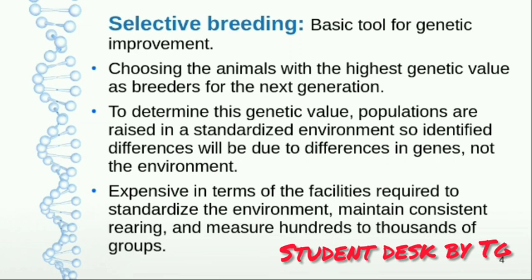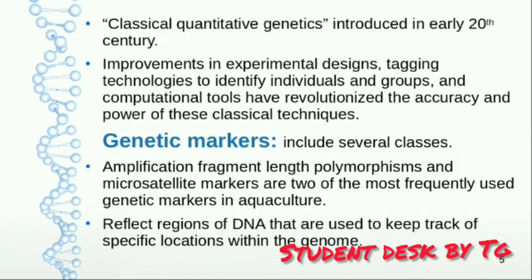We have to observe animals in groups of 100 to 1000 at one time — actually, in many groups simultaneously. That is why it is expensive in terms of facilities.